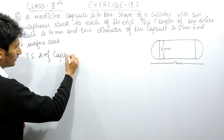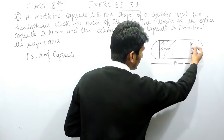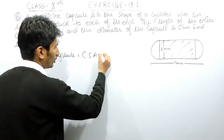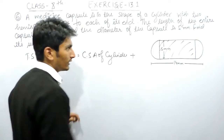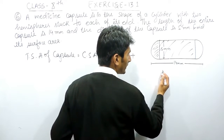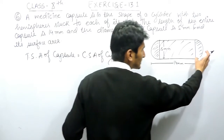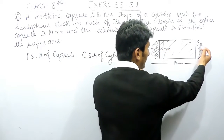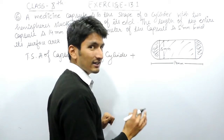Now obviously if you want to find the total surface area of this capsule, that will be equal to the curved surface area of the cylinder, plus the curved surface area of one hemisphere, plus the curved surface area of the other hemisphere. Since these two hemispheres are equal, finding the surface area of both together gives you the surface area of a complete sphere.